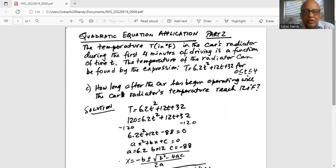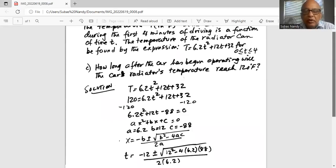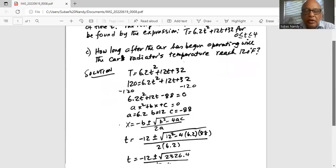So for capital T, we substitute 120 = 6.2t² + 12t + 32. Then we subtract 120 from both sides to get 6.2t² + 12t - 88 = 0.